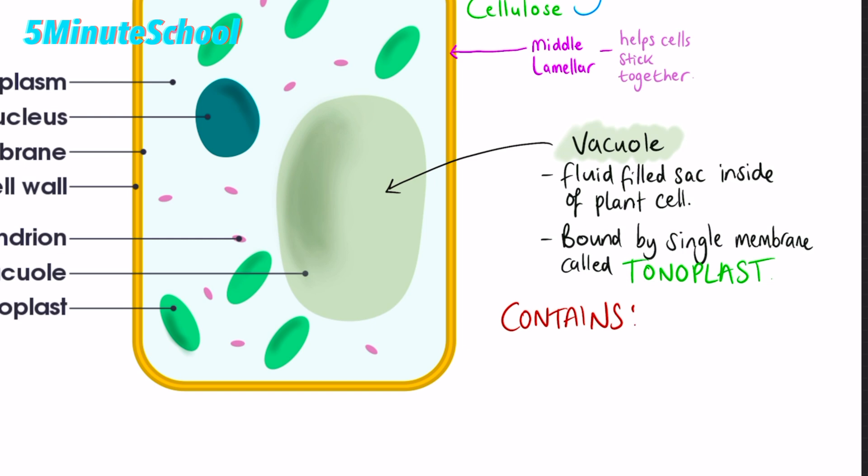The vacuole of a plant contains a solution of sugars, salts, amino acids, sometimes there's waste products there, maybe there's even some pigment storage going on.